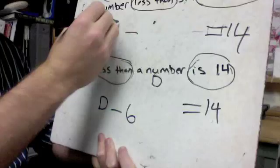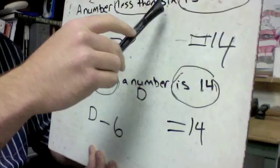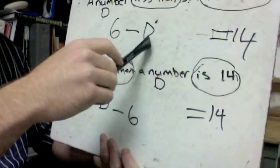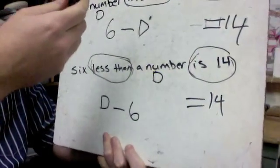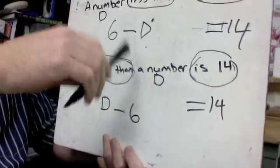Now up here, it's going to be opposite. It's going to be six minus d because we have a number less than six. So whatever the number is, we're taking away six. And the answers to these problems, you don't need to find the answers to these problems, but notice that they would be different.